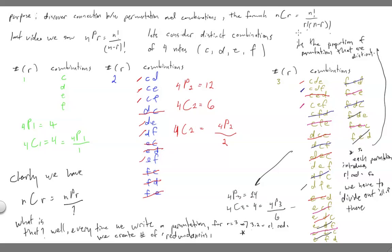So, we're really looking for the proportion of permutations that are distinct, which we can get by taking the total number of permutations and dividing it by r factorial, which gives us our take-home formula right here.